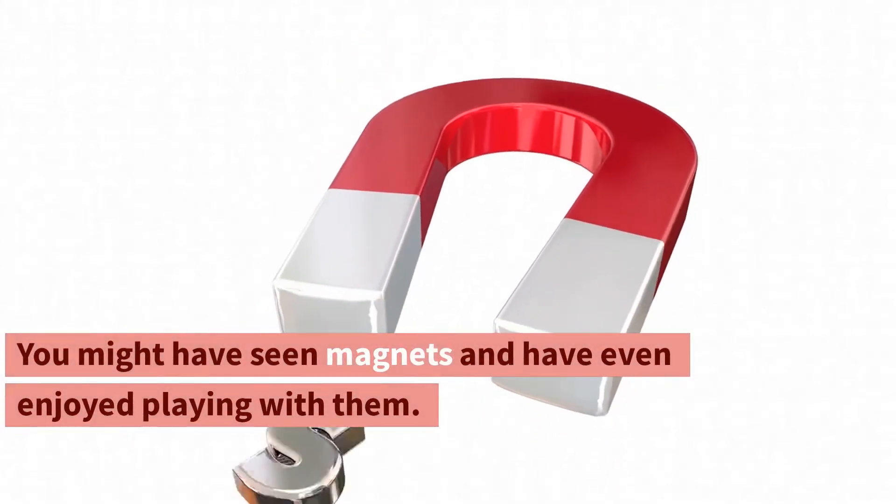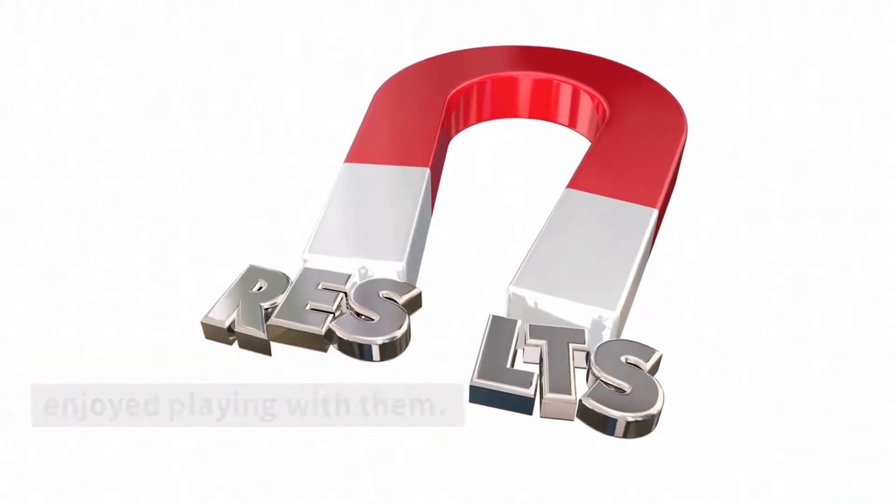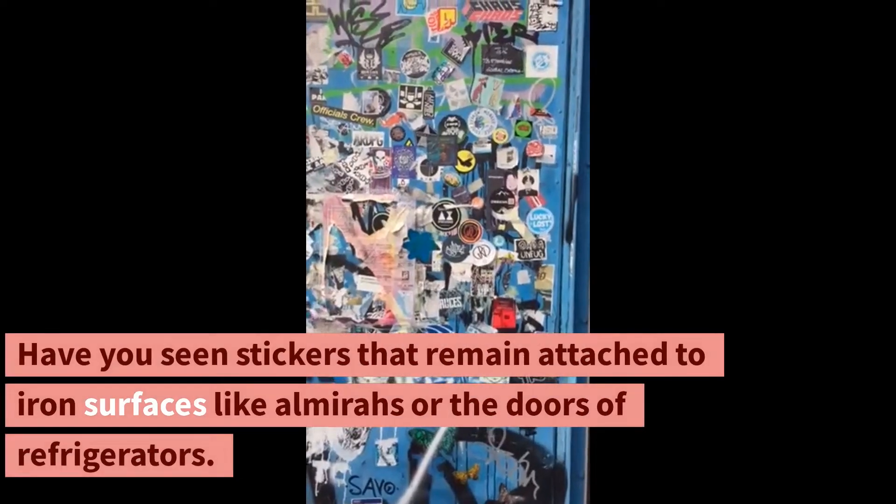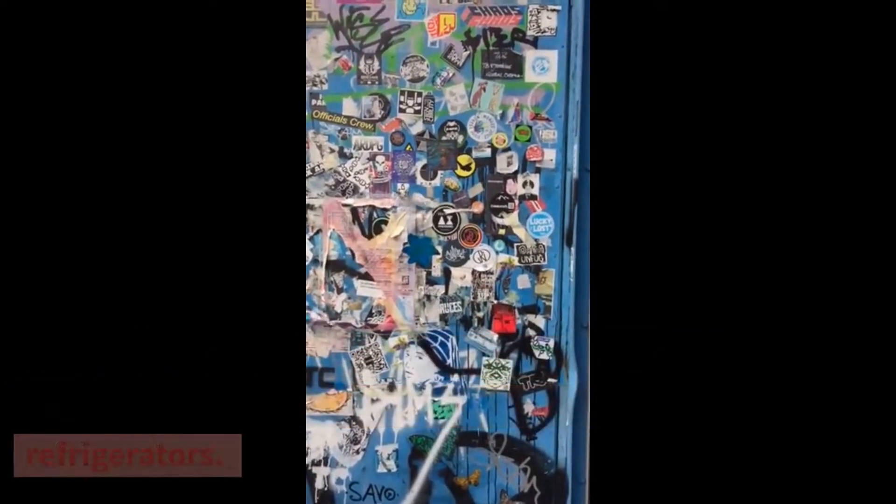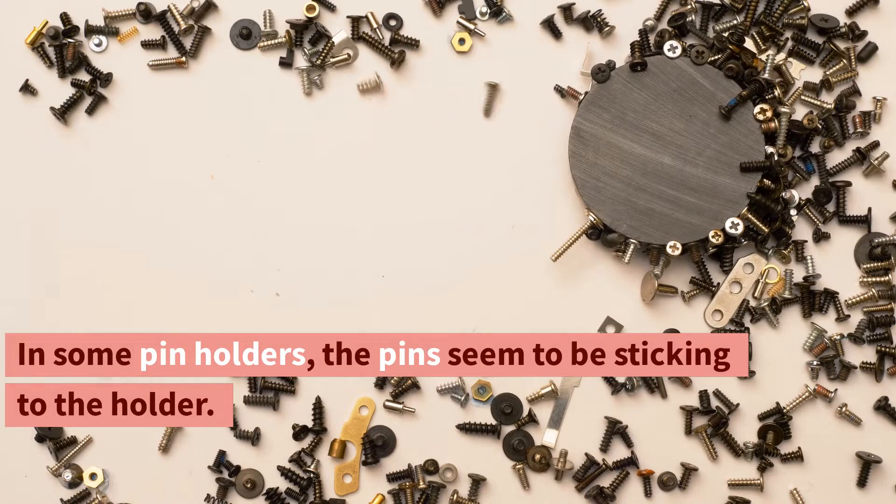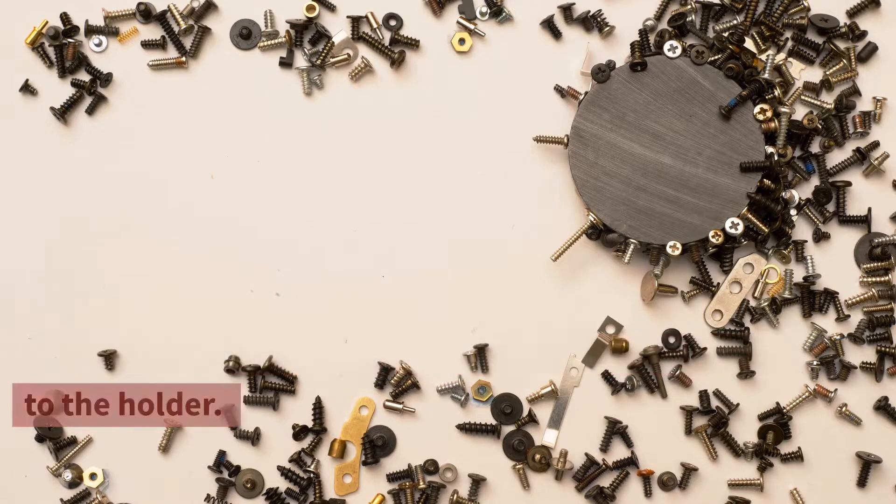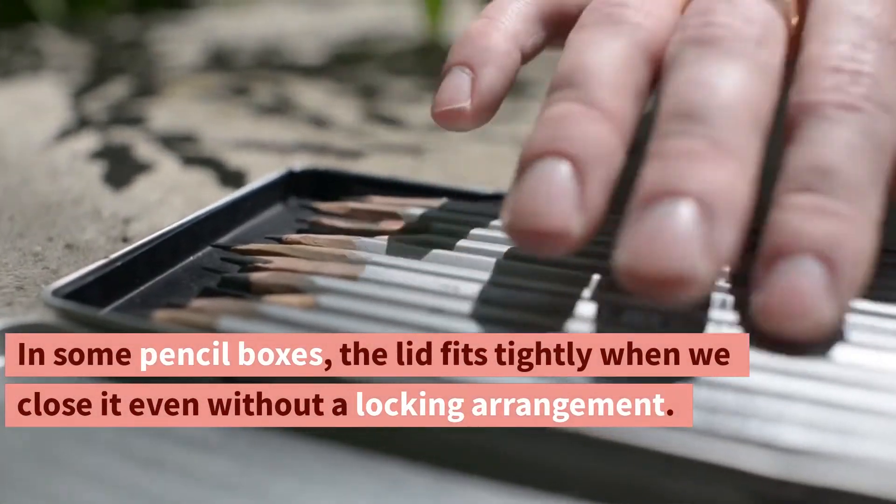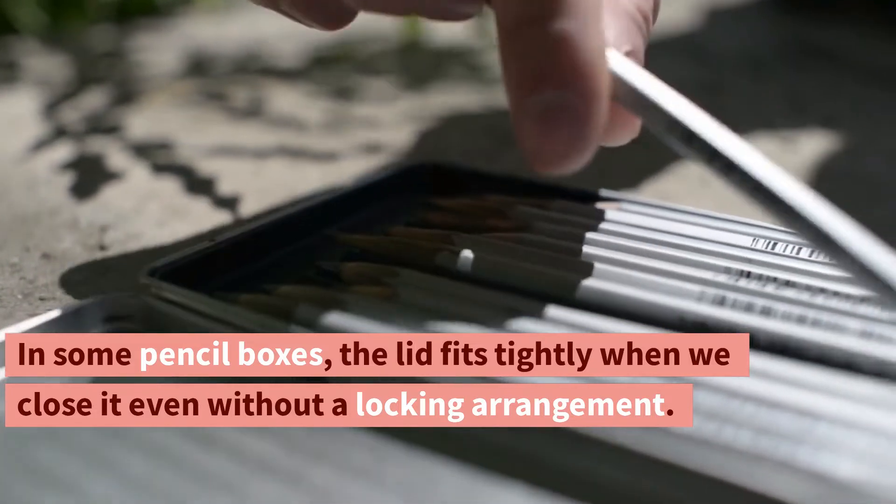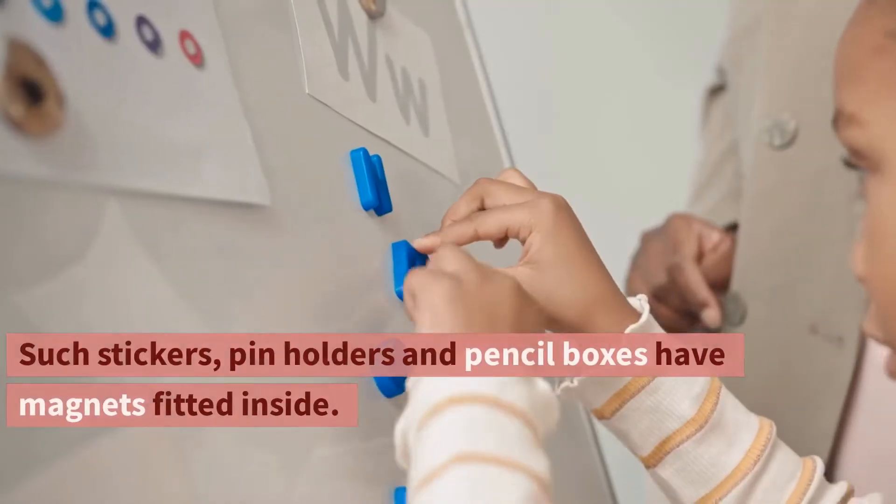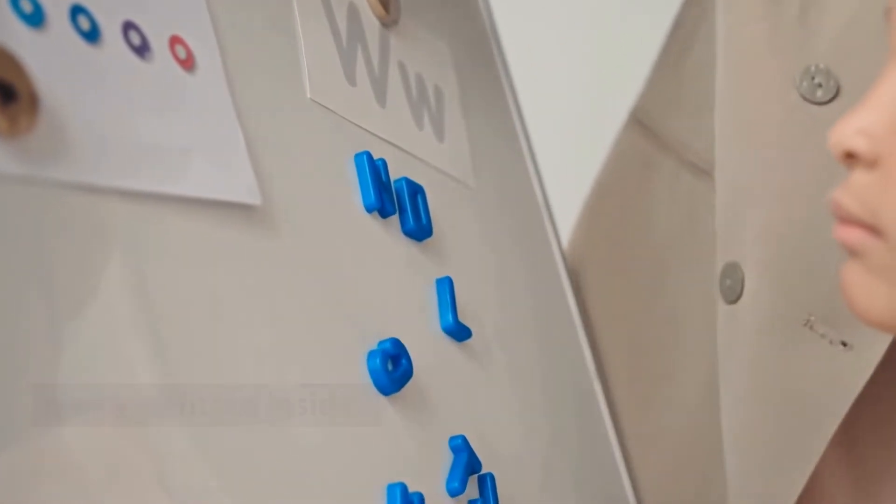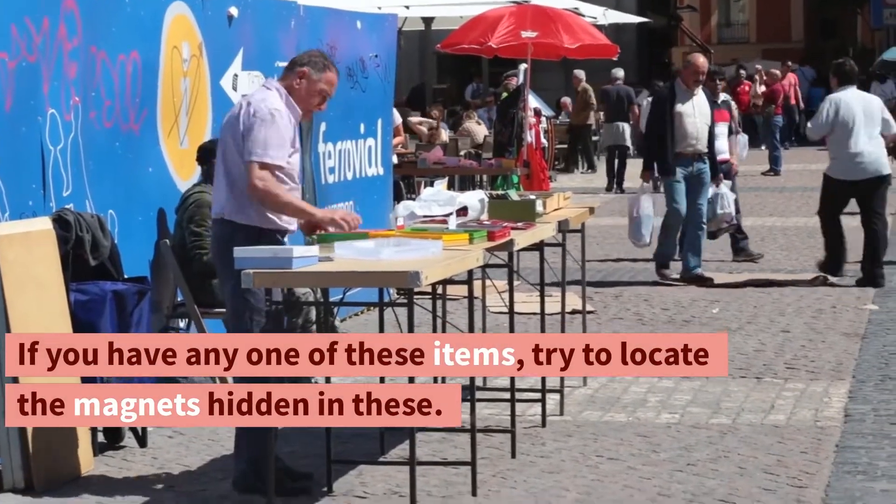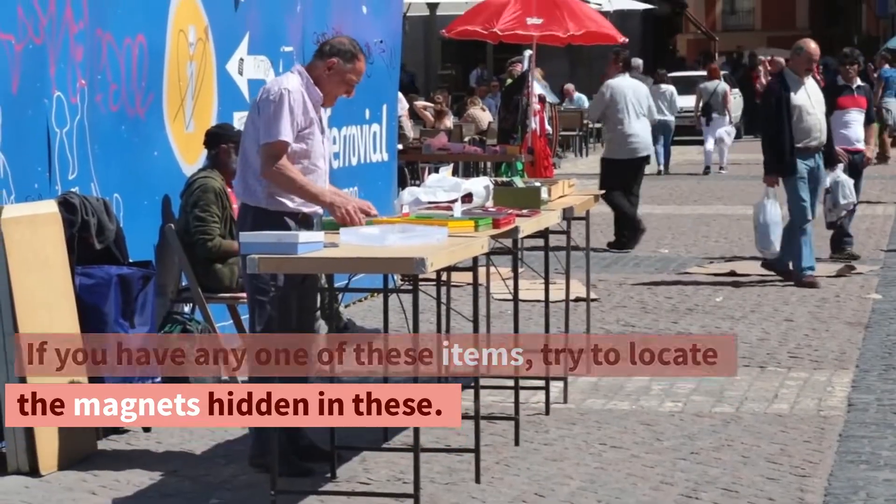You might have seen magnets and have even enjoyed playing with them. Have you seen stickers that remain attached to iron surfaces like almirahs or the doors of refrigerators? In some pin holders, the pins seem to be sticking to the holder. In some pencil boxes, the lid fits tightly when we close it even without a locking arrangement. Such stickers, pin holders and pencil boxes have magnets fitted inside. If you have any one of these items, try to locate the magnets hidden in these.